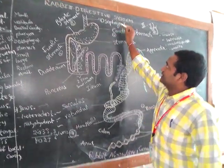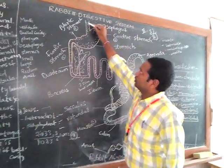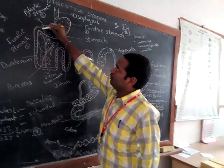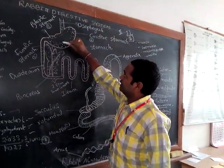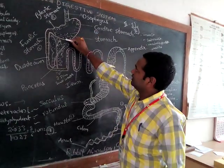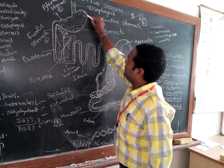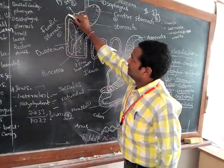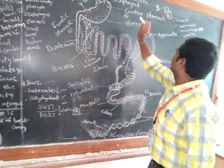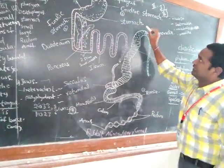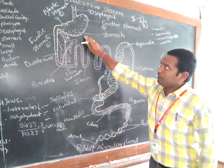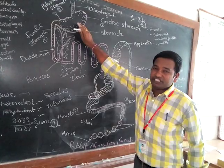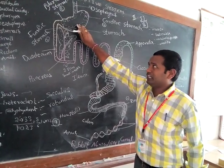Next is the esophagus. The esophagus is a tubular structure through which food material passes. After that is the stomach. The stomach is a bag-like structure. The stomach functions as the storage of food material, and digestion is also completed in the stomach.